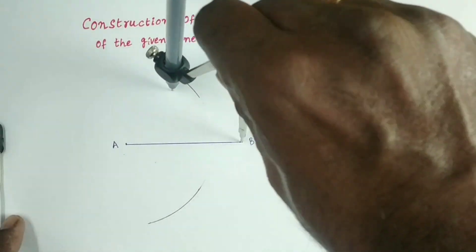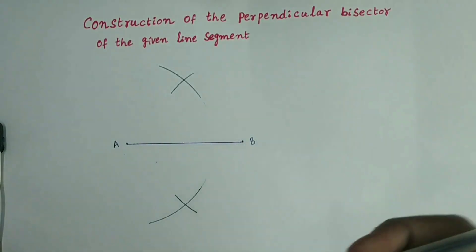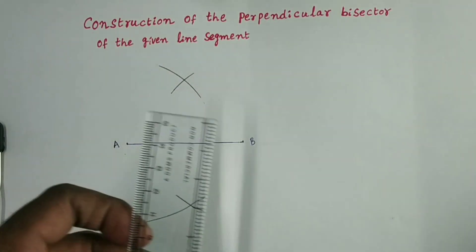Take B as center, with the same radius, draw two arcs, both opposite sides of AB.